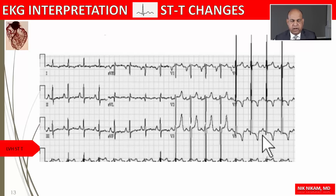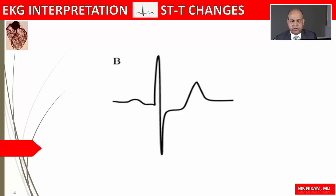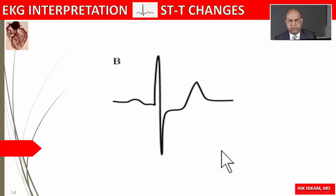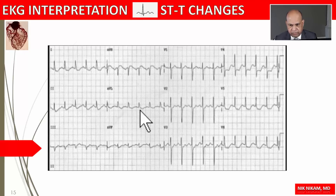This is an example of left ventricular hypertrophy with strain pattern, characterized by down-sloping ST segment and T wave inversion along with findings of LVH. Now let's look at horizontal ST depression. Here is a baseline, and as you can see there is horizontal ST depression along with an upright T wave. In this example we see horizontal ST depression in leads V4, V5, V6, and also in lead I and to some degree in aVL. Horizontal ST depression is suggestive of subendocardial myocardial ischemia.